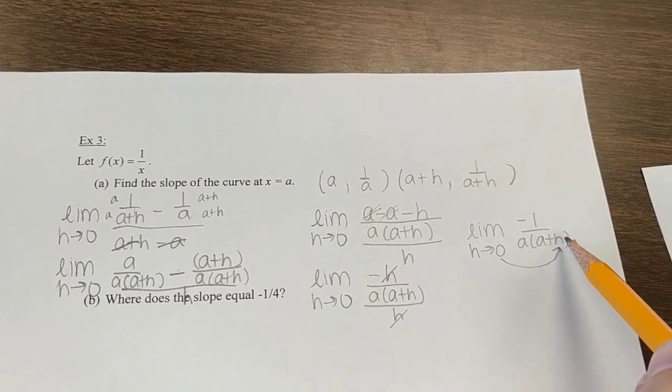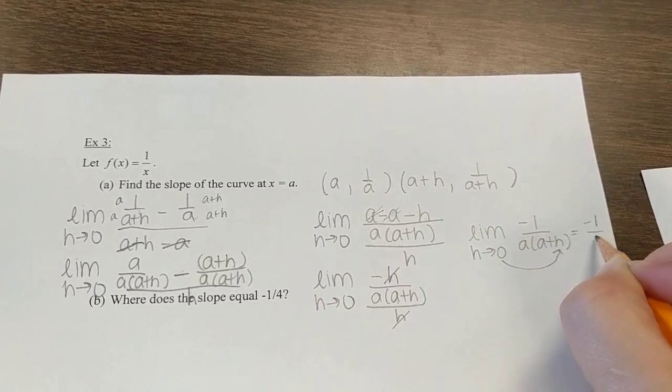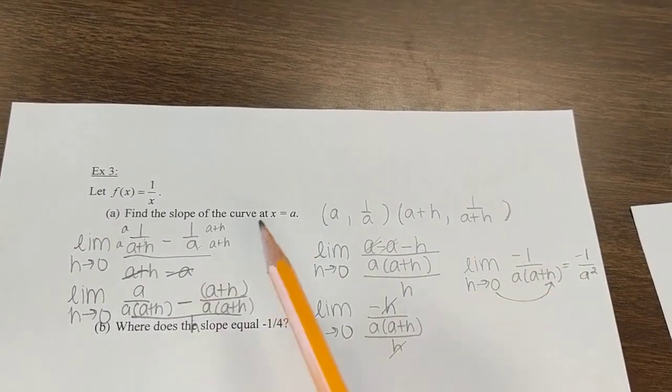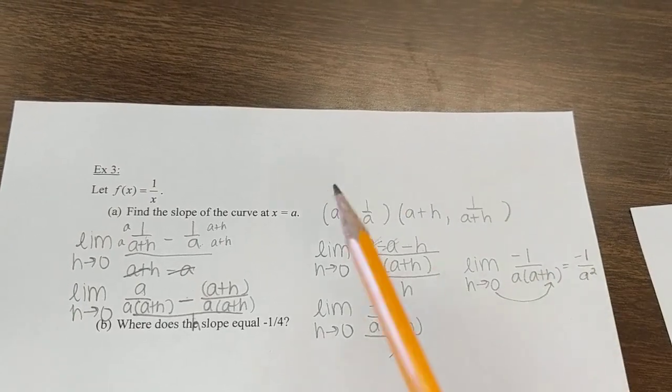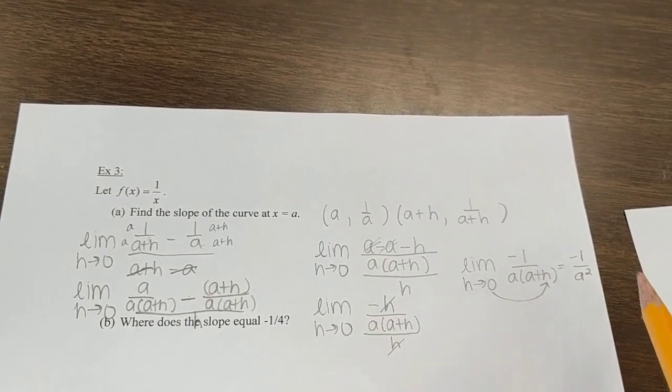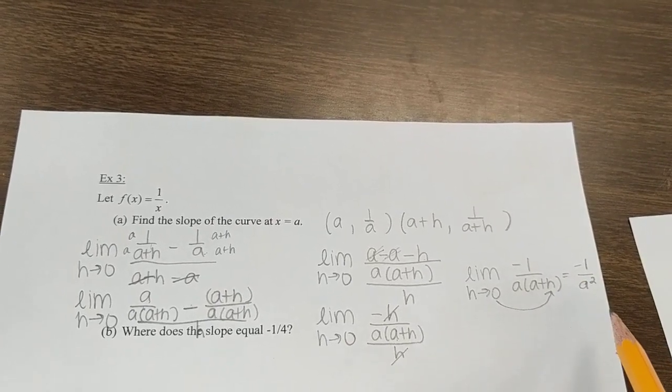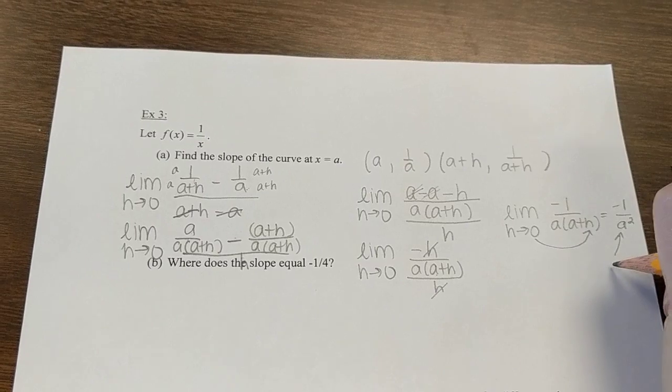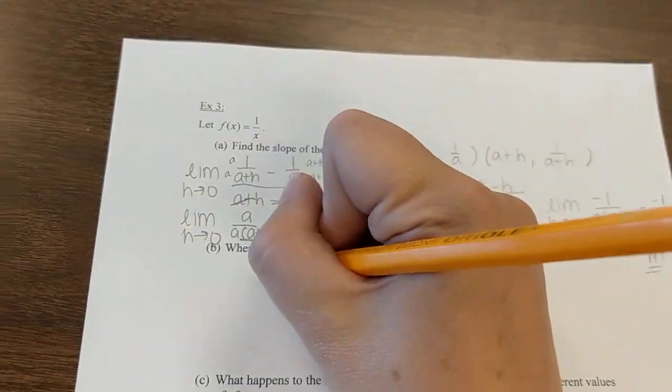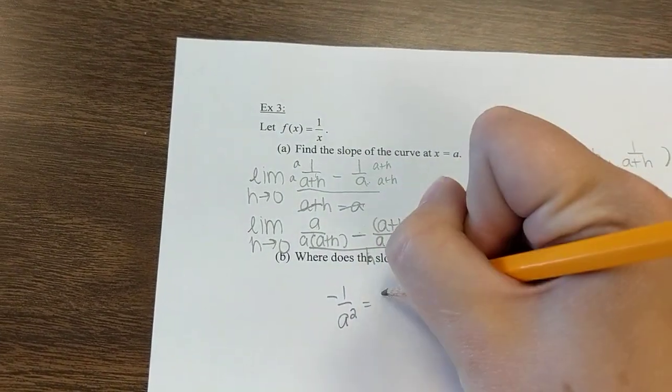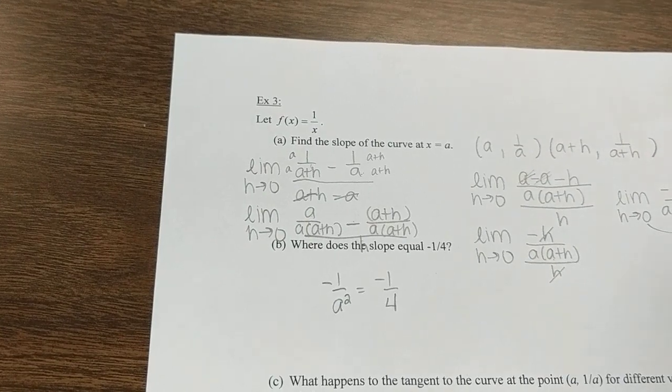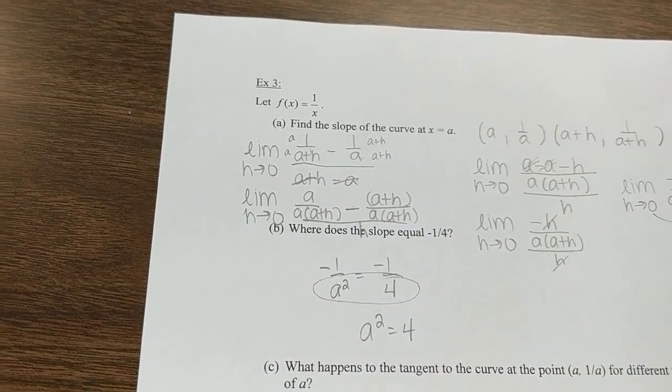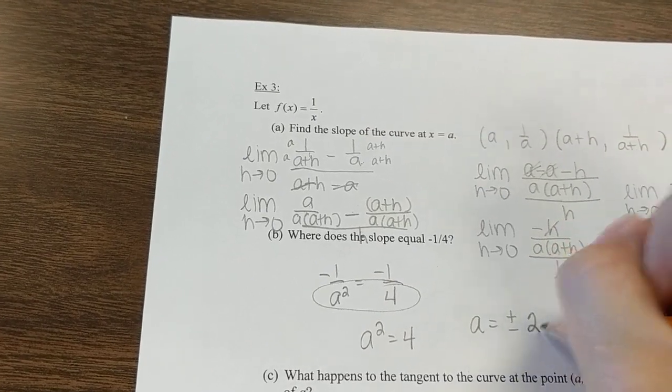Now I'm at a point where I can plug this 0 in. a plus 0 is just a, so I get a times a, which is negative 1 over a squared. Now I can pick any a value and find the slope. I could say, what if I wanted to know the slope at 4? I could plug in 4. If I wanted to know the slope at 10, I could plug in 10 and figure out what the slope will equal. Part B says where does the slope equal negative 1 fourth? This is the slope. They're asking where is negative 1 over a squared equal to negative 1 over 4. Where is a squared equal to 4? That's at plus or minus 2.